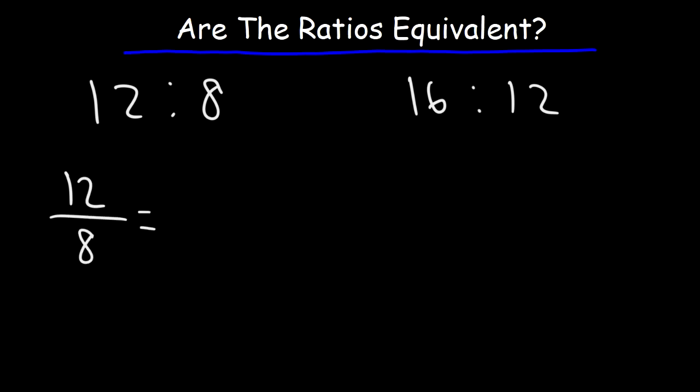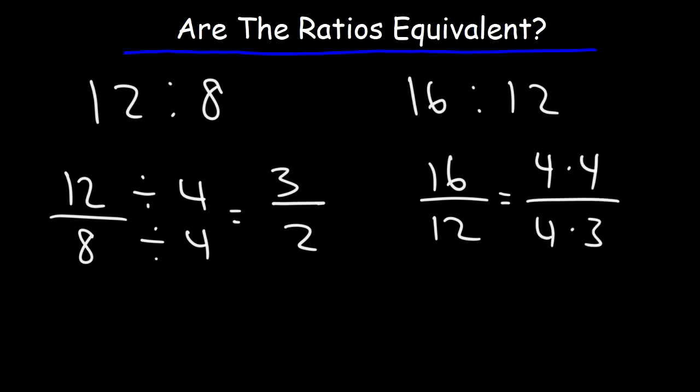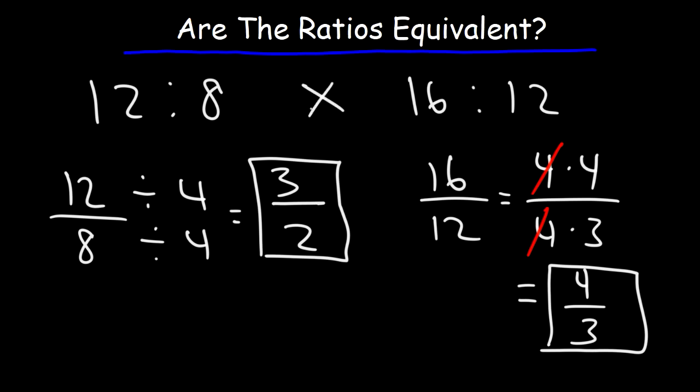12 over 8 - we could divide both numbers by 4. 12 divided by 4 is 3, 8 divided by 4 is 2. Now, 16 over 12, how can we reduce it? We can write 16 as 4 times 4, 12 is 4 times 3, and so we could cancel a 4. This gives us a simplified fraction of 4 over 3. So notice that these two are not the same. Therefore, these ratios are not equivalent to each other.